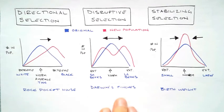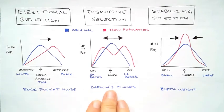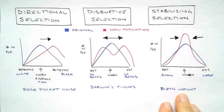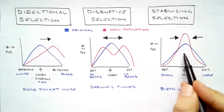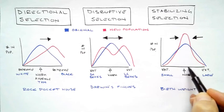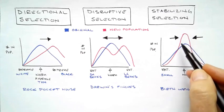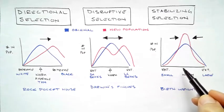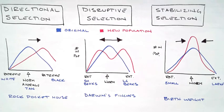Which one of these do you think is more prone to extinction: directional, disruptive, or stabilizing? If you said stabilizing, you're correct, because if there is just a slight adjustment or a huge mutation, this small narrow group of organisms will go extinct much quicker. All right, so that is directional selection and disruptive selection and stabilizing selection.